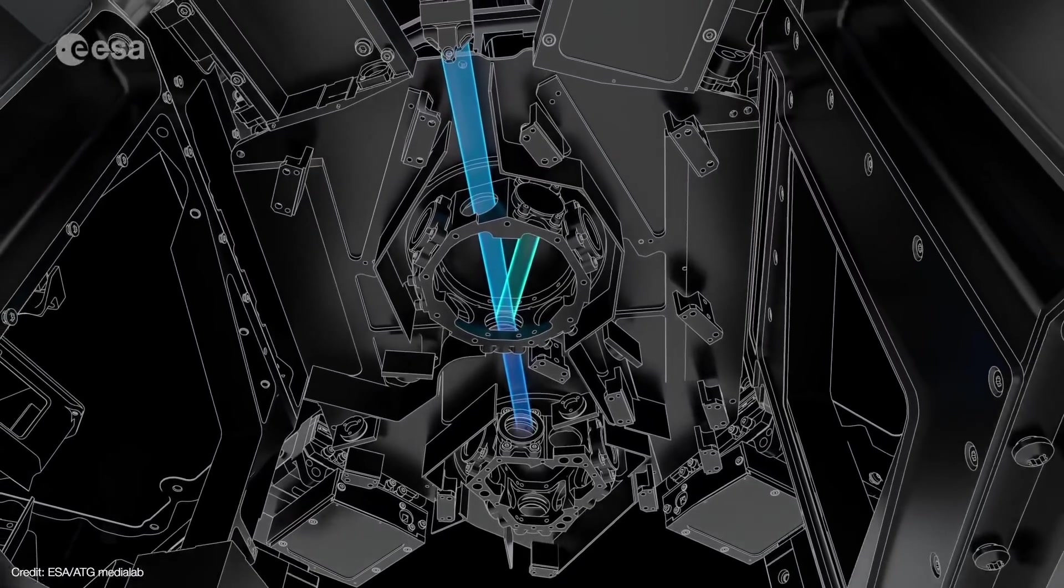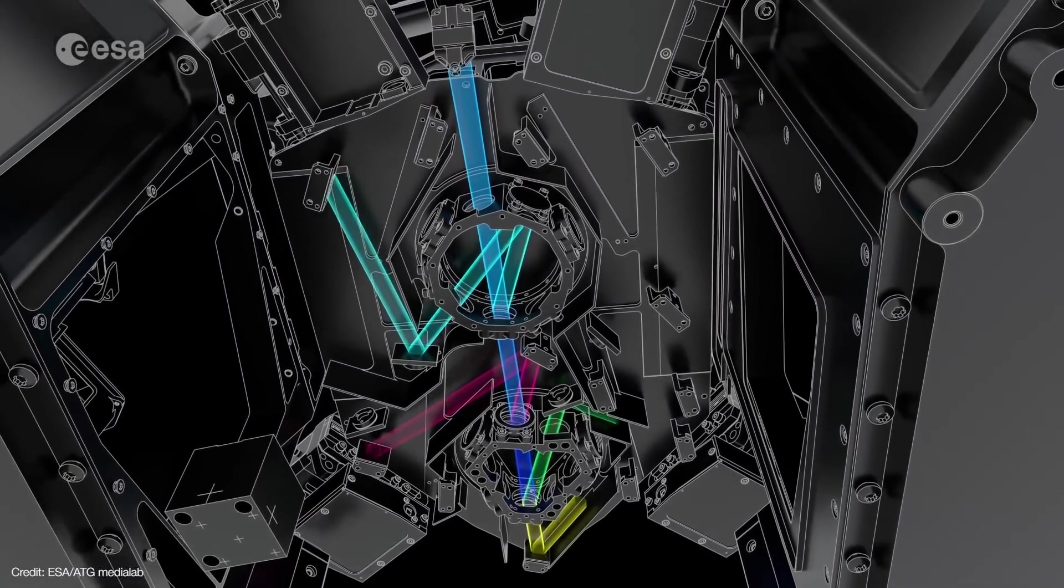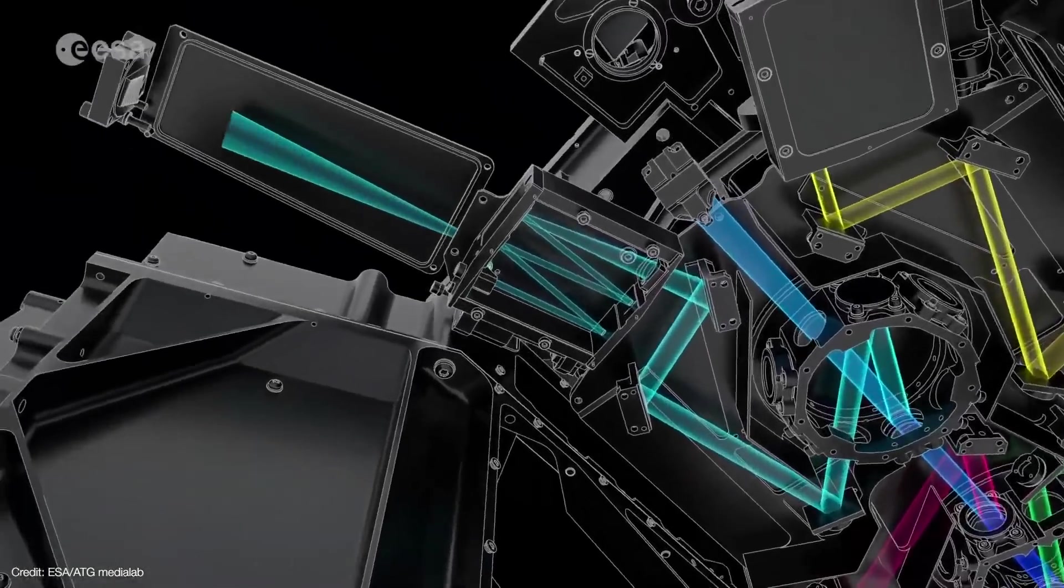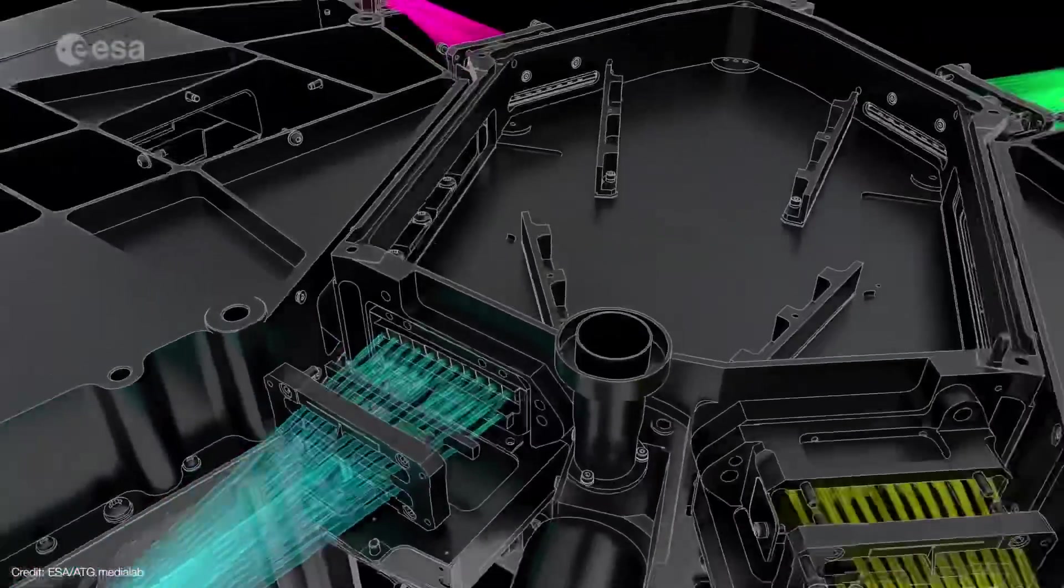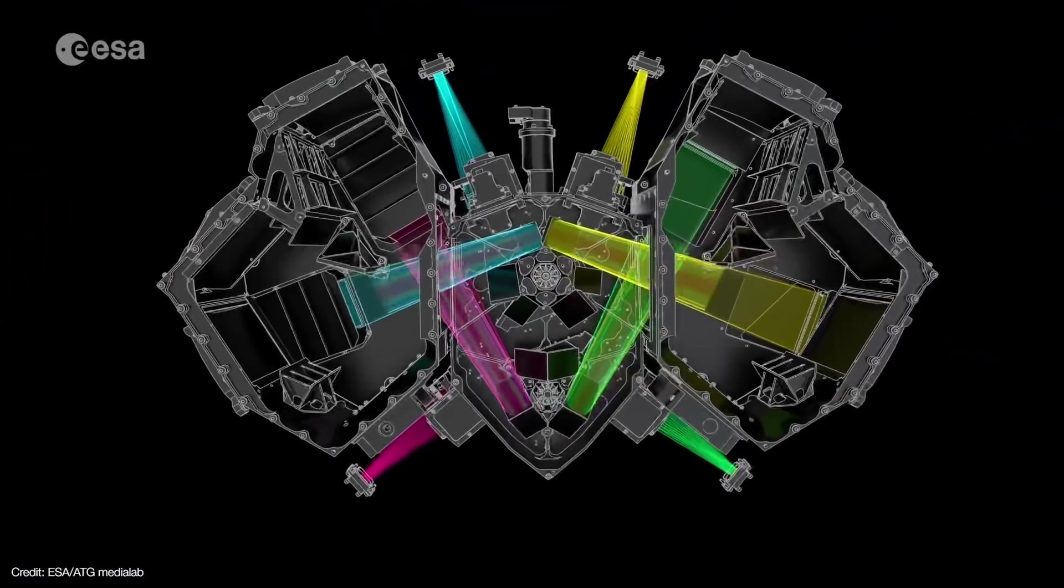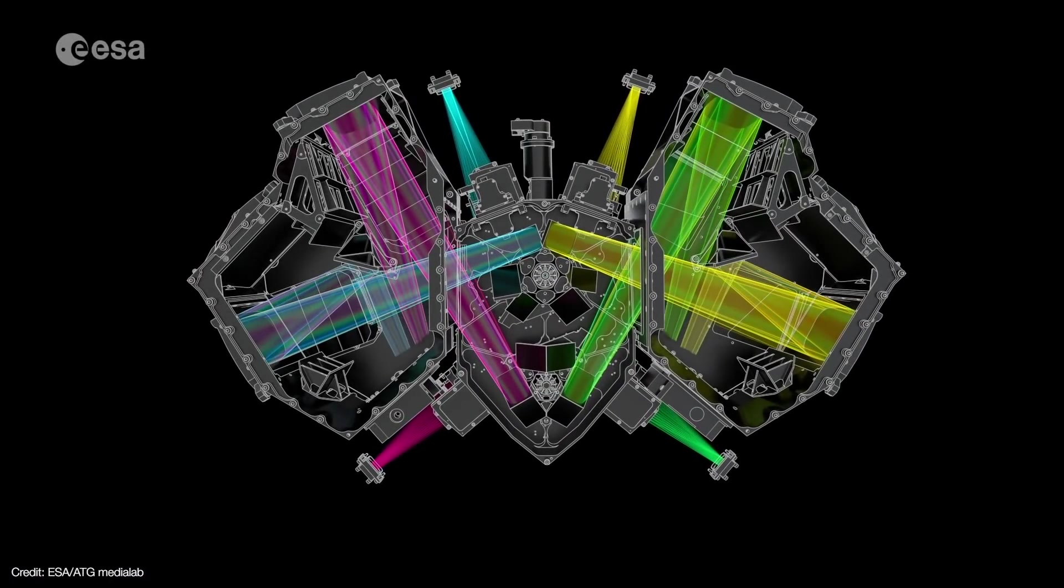After light enters the spectrograph, it is split out into four channels, each of which are sensitive to different parts of the spectrum. The image is sliced into segments which are then fed into a maze of relay mirrors and grisms that disperse the image into a final spectrum.